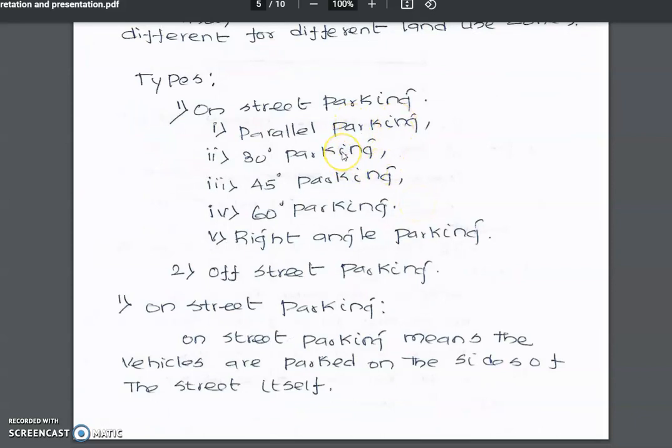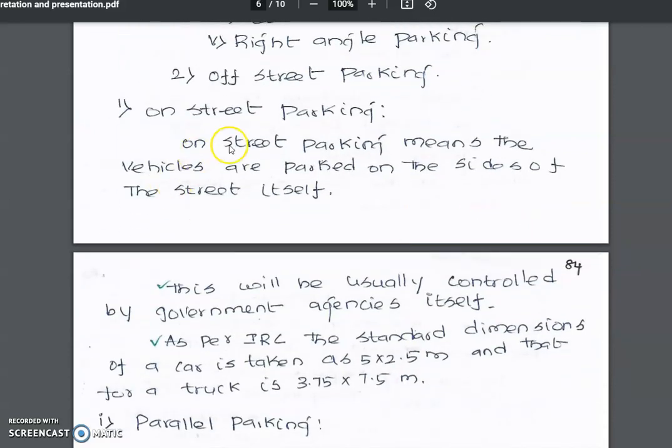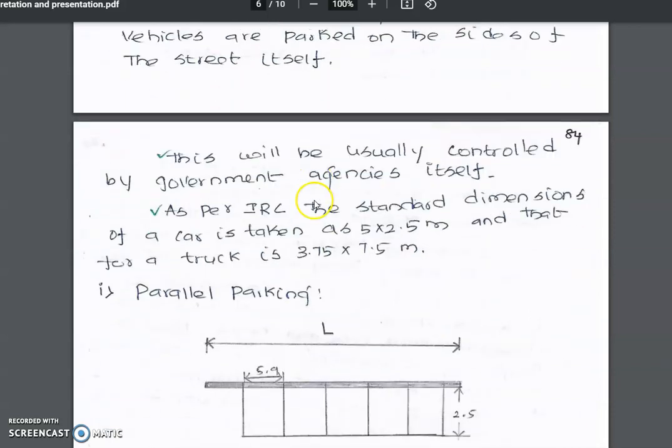The five categories are: parallel parking, 30-degree parking, 45-degree parking, 60-degree parking, and right-angle parking. On-street parking means vehicles are parked on the sides of the street itself, usually controlled by government agencies. As per IRC (Indian Road Congress), the standard dimension of a car is 5m × 2.5m, and for a truck is 7.5m × 3.75m.